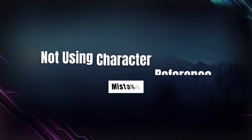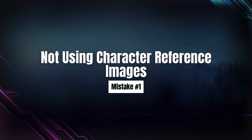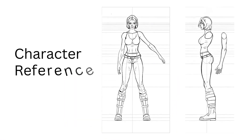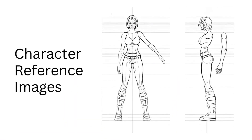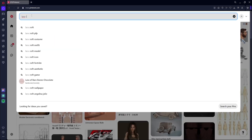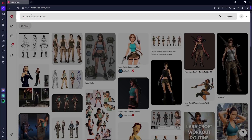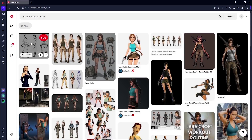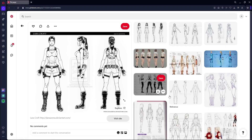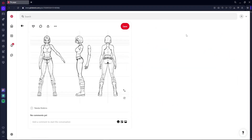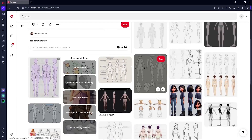The first mistake is not using reference images. Many beginners just jump right in without any reference, modeling their character from imagination, which leads to incorrect proportions and unnatural shapes. The key is to always use reference images — this ensures accurate proportions and helps maintain consistency throughout the modeling process. A great place to find reference images is Pinterest, which I personally use not only for gathering references but also for inspiration. You can also check other sources like ArtStation for high-quality concept art and character blueprints.